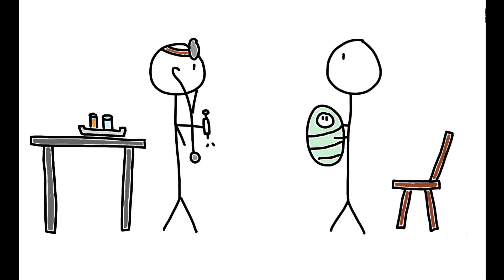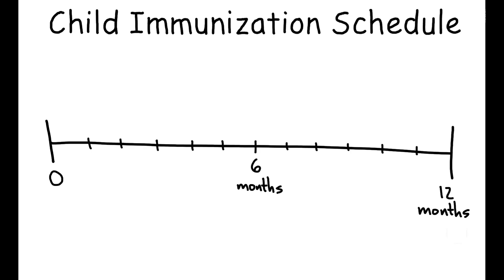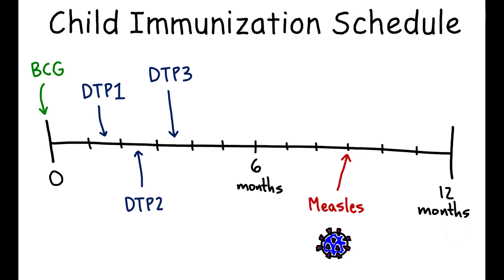Childhood immunization is one of the most cost-effective ways of reducing child mortality. Children under the age of one need to receive five routine vaccinations: BCG at birth, vaccines for diphtheria, tetanus, and pertussis at ages one and a half, two and a half, and three and a half months, and finally a vaccine for measles at nine months.